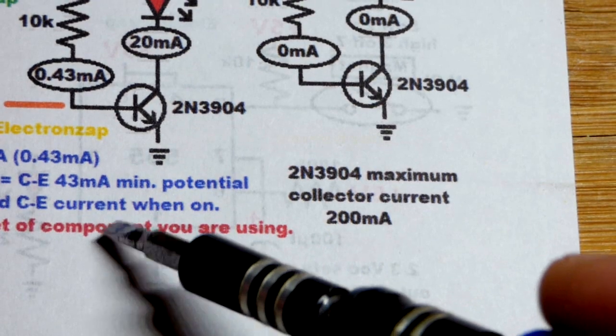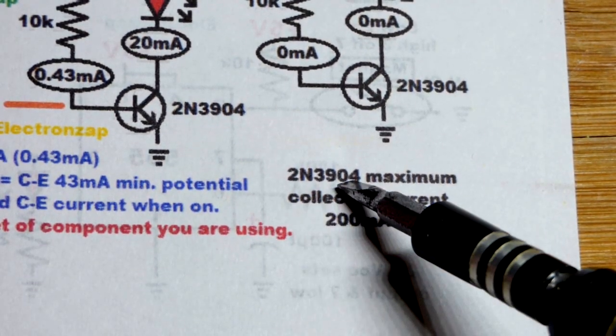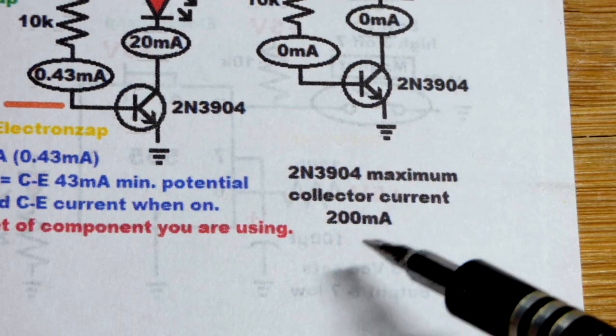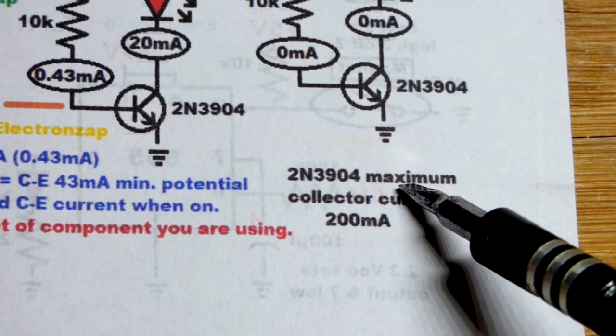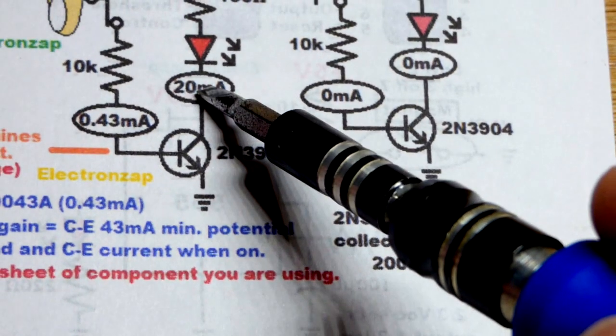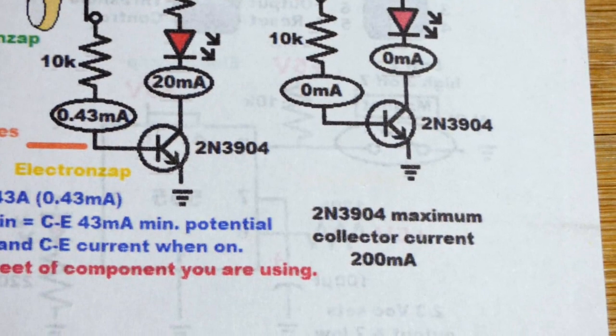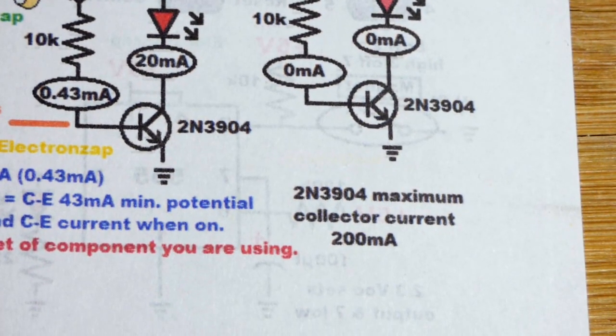So now just really quickly, I wrote over here to make sure you always check the data sheet. One thing, if you look at a 2N3904, all the data sheets I looked at, they showed an absolute maximum collector current of 200 milliamps. And as you can see there, we got 20 milliamps going through this one here, maximum. And so we are plenty safe.